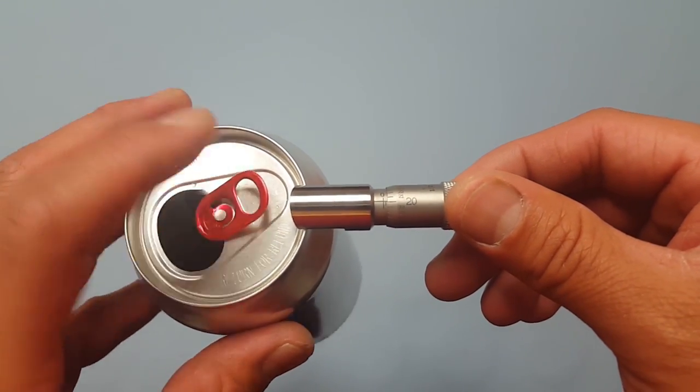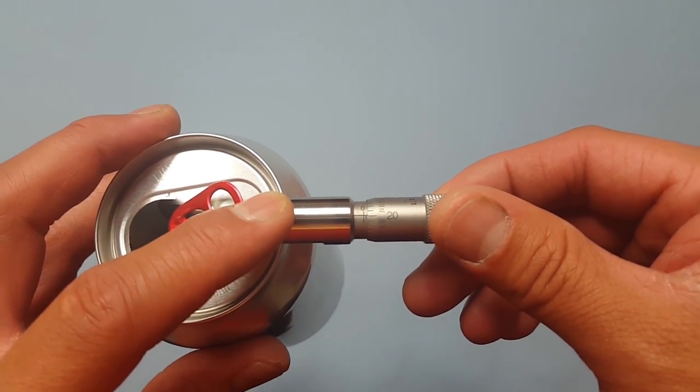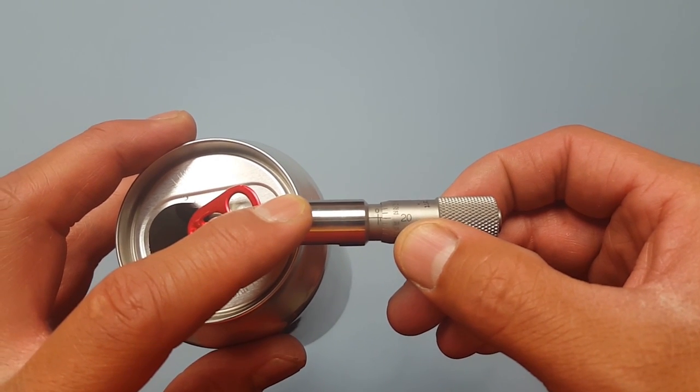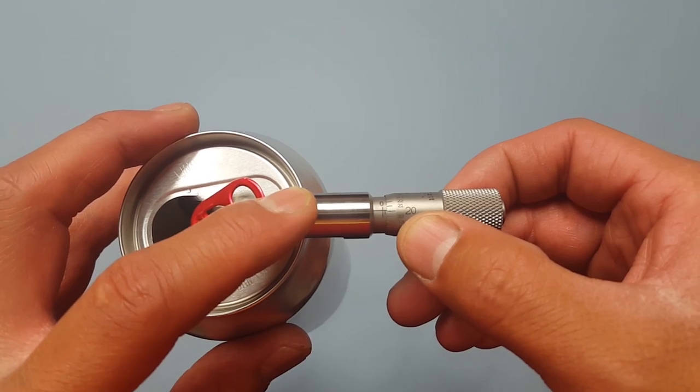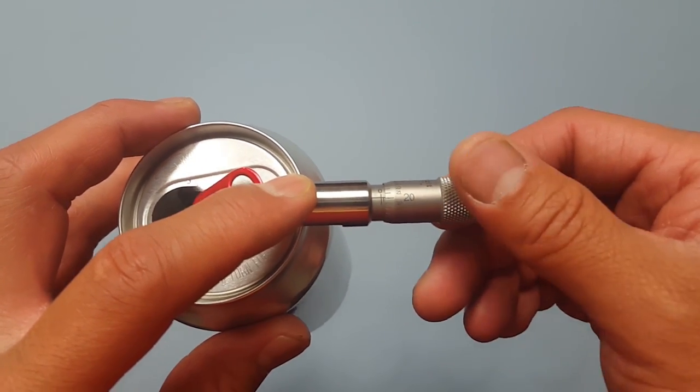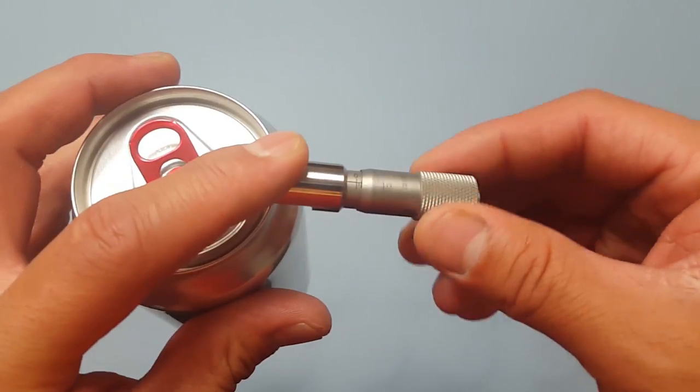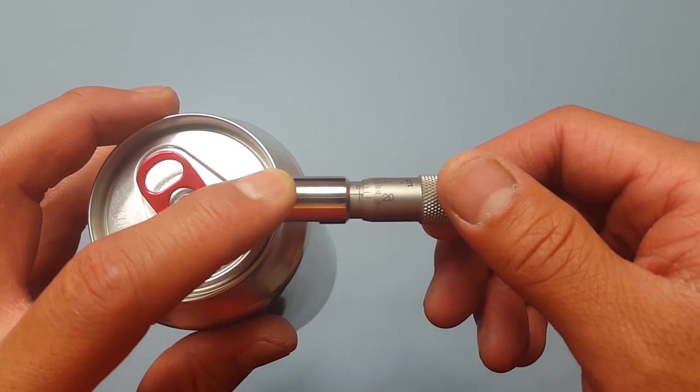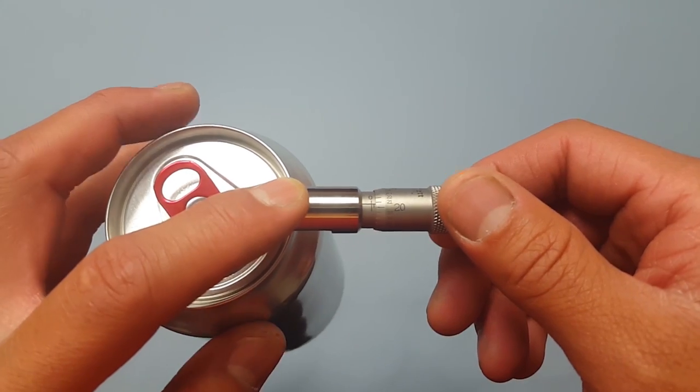You notice in this first location we have one tick showing which indicates 25 thousandths plus the 20 on the outer barrel, which shows if you add them 45 thousandths. Move to your second location. We have 25 thousandths plus 21 which indicates 46.